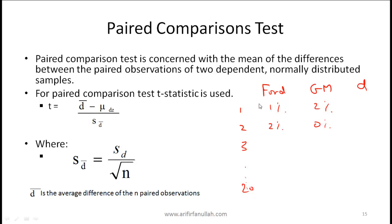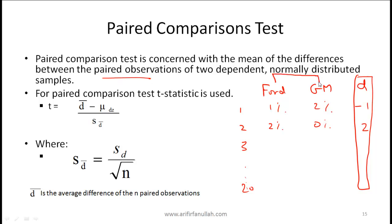For a paired comparison, you compute the difference between the two returns each period — Ford minus GM. Last month's difference is minus 1%, two months ago it is plus 2%, and so on. The focus is on this difference column. A null hypothesis might be that the mean difference, mu-d, equals zero, versus the alternate that mu-d is not equal to zero.